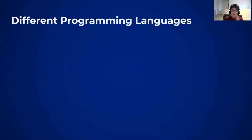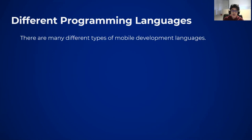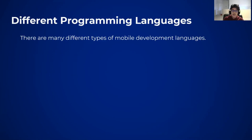Now, there are many different programming languages you can use to develop mobile apps. If you're developing for Android, I highly suggest using Java or Kotlin, whereas for iOS, you'd be best off with Objective-C or Swift. However, the programming language I'm going to be teaching you isn't any of these. It's a programming language called React Native.